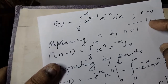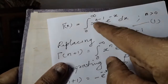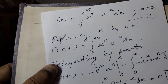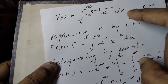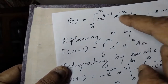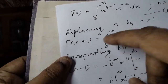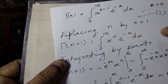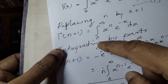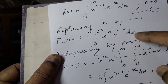This is equation one. Now, replacing n by n plus 1, gamma of n plus 1 equals the integral from 0 to infinity of x raised to n times e raised to minus x, dx.